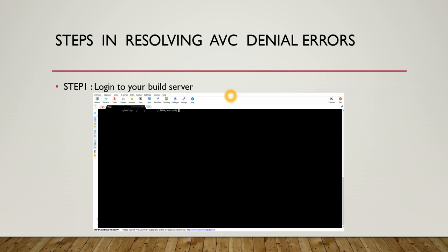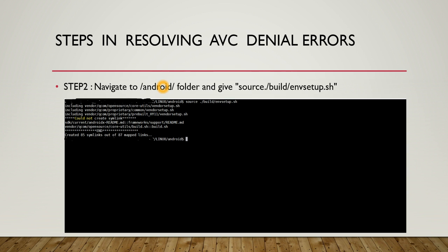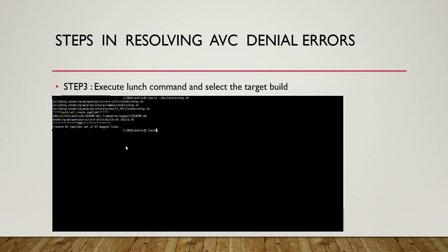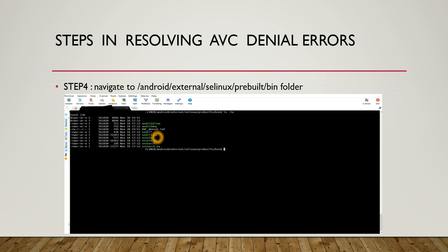Now let's move on and see the steps in resolving AVC denial errors. Step one: log in to your build server — here I have attached a screenshot of my build server. Step two: navigate to the Android folder and run source build/envsetup.sh to prepare your environment. Step three: execute the lunch command and select the target build. Step four: navigate to android/external/selinux/prebuilt/bin folder, which contains the audit2allow and audit2why tools.